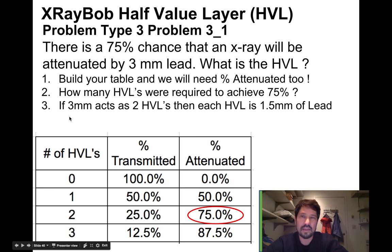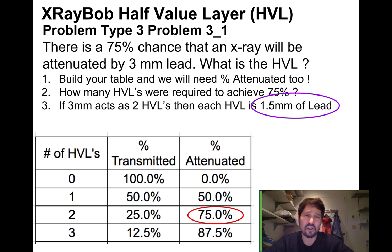And they said three millimeters was used. So three millimeters acted as two HVLs. Therefore, each HVL must be half of that. One and a half millimeters of lead must be the HVL for this system. If three millimeters acts as two HVLs, then each HVL must be half of that. One and a half millimeters. And circle our answer so our teacher can find it.